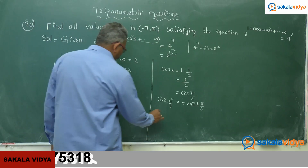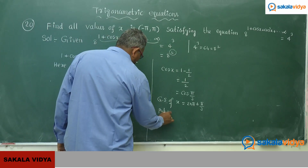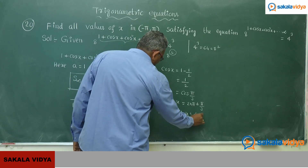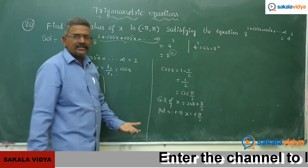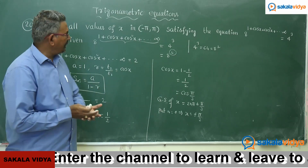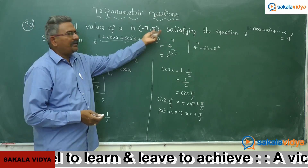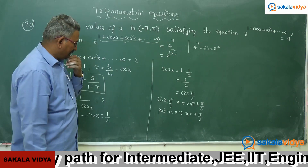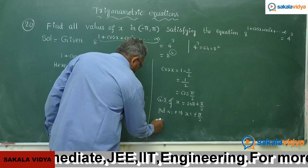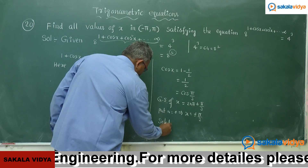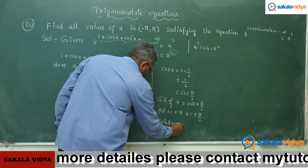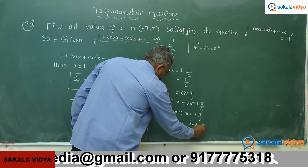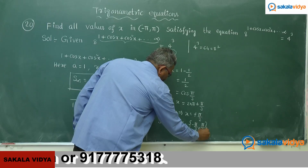Putting n equals 0, we get x equals plus or minus pi by 3, that means plus 60 degrees and minus 60 degrees. Both values lie within the interval minus pi to pi, that is minus 180 degrees to 180 degrees. Therefore, the solution set is { minus pi by 3, pi by 3 }.